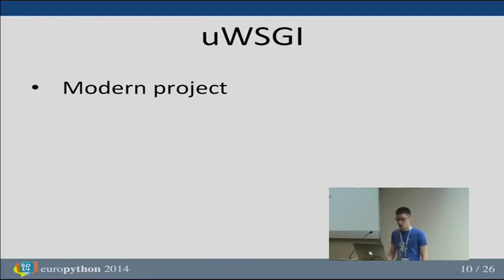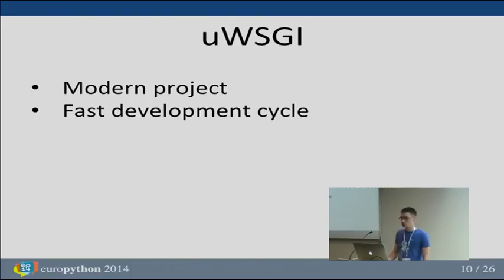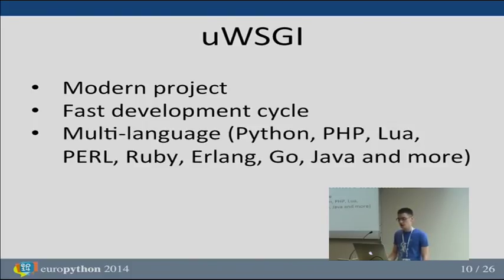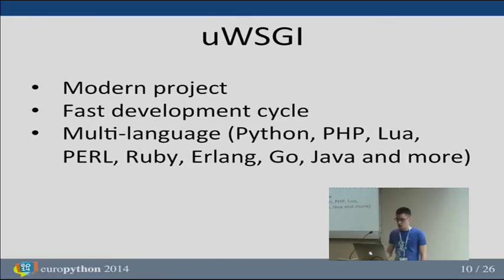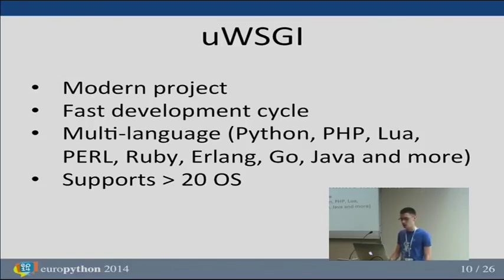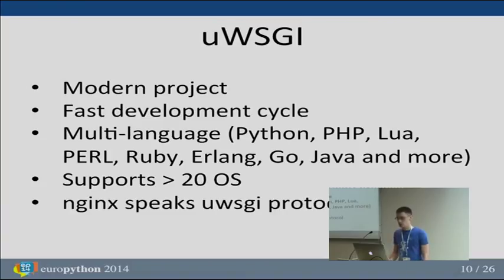UWSGI has a really fast development cycle and new features are constantly being added. It supports a lot of languages including Python — CPython, PyPy, and Jython is coming — as well as PHP, Lua, Perl, Ruby, Erlang, Go, Java, V8 engine support, and Mono for running ASP.NET applications, and more. It works on all Linuxes, Windows, BSDs, macOS, Solaris, and so on. Nginx supports the UWSGI protocol directly, and that is the best-performing protocol for UWSGI. It also has a ton of features we'll discuss some of shortly.